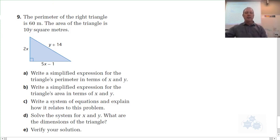So A says, write a simplified expression for the triangle's perimeter in terms of x and y. So the perimeter is simply all of these side lengths added up, right? And we're given that the perimeter equals 60, so we can write an equation. So that would be 2x plus 5x minus 1 plus y plus 14. So the perimeter has to equal 60.